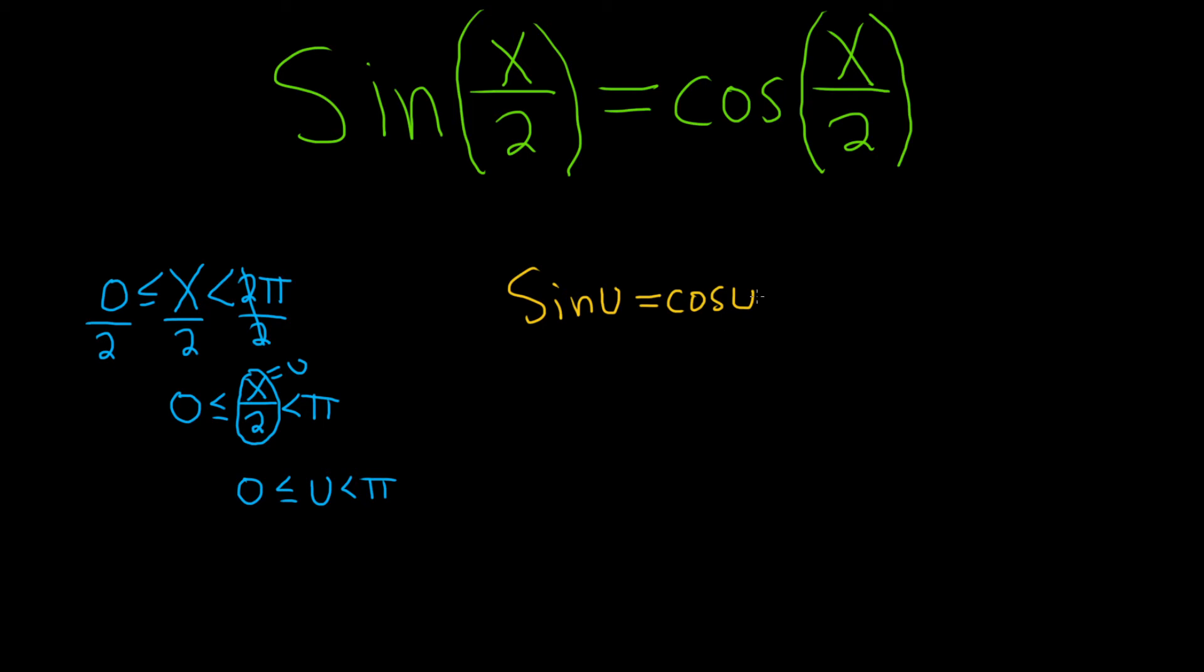So now we're looking for solutions to this equation. When is sine u equal to cosine u when u is between 0 and π? If we think about the unit circle and the values that we know of sine and cosine, we know that the only time they're the same involves the angle π over 4. They're the same at π over 4, which is here.